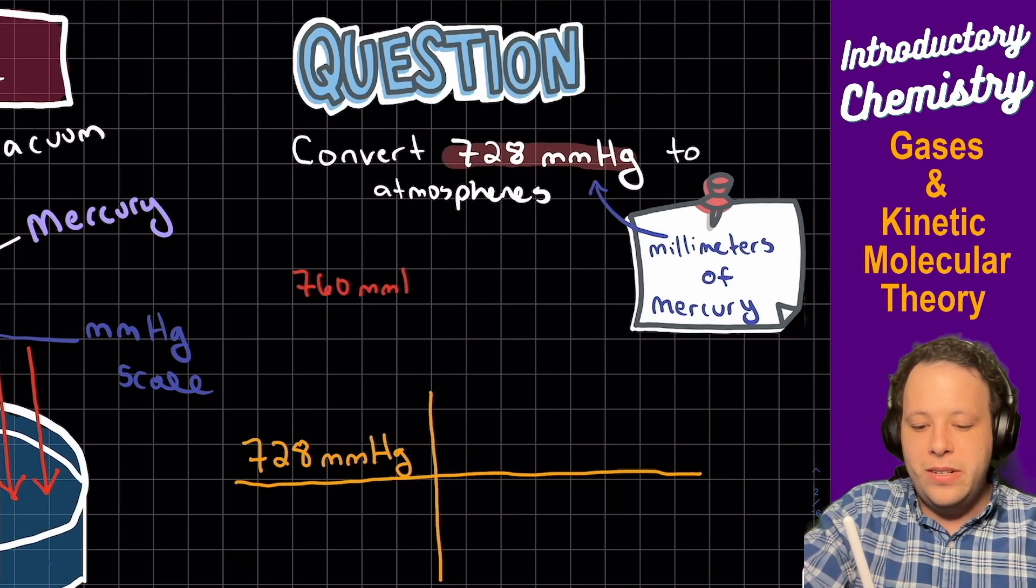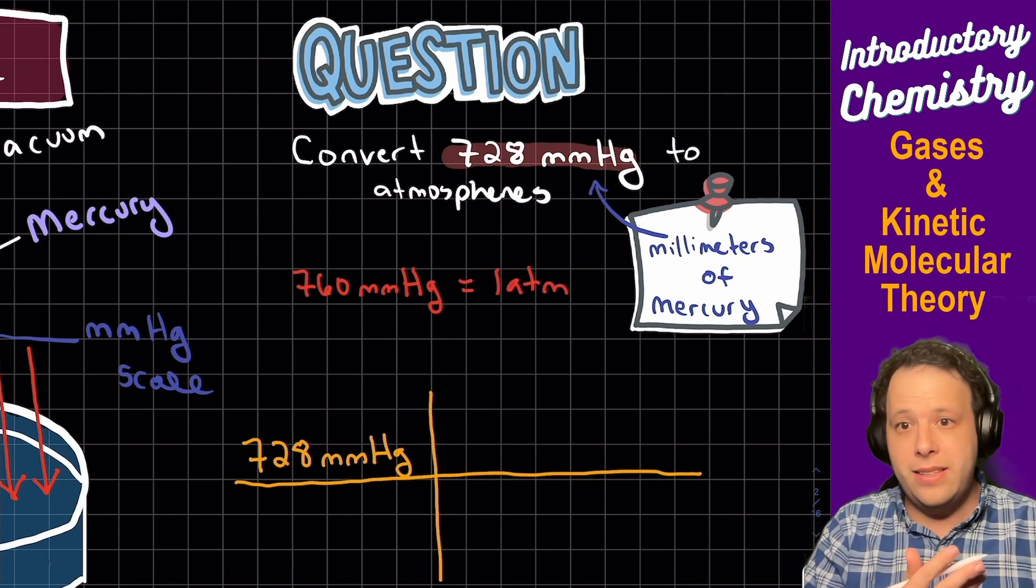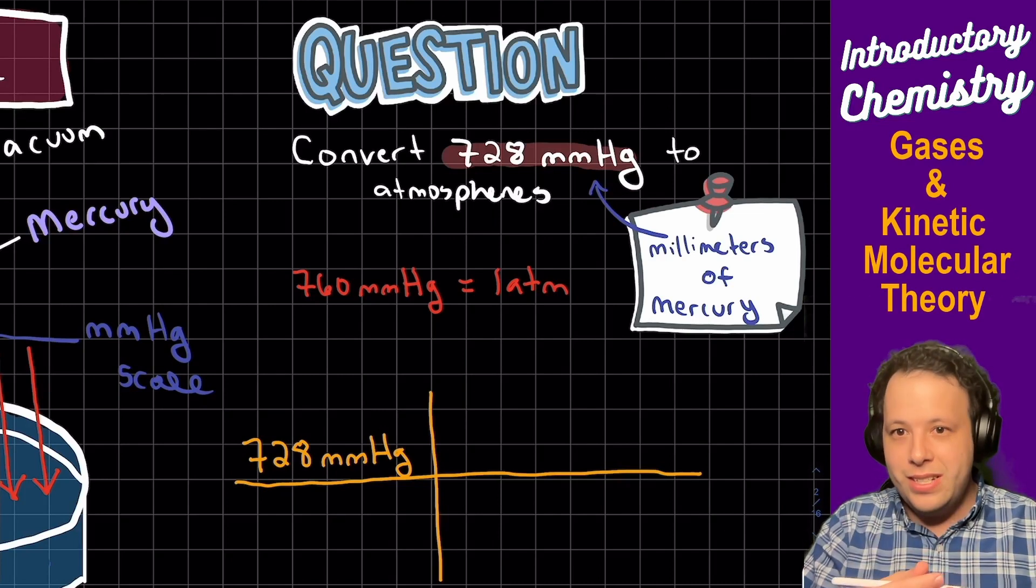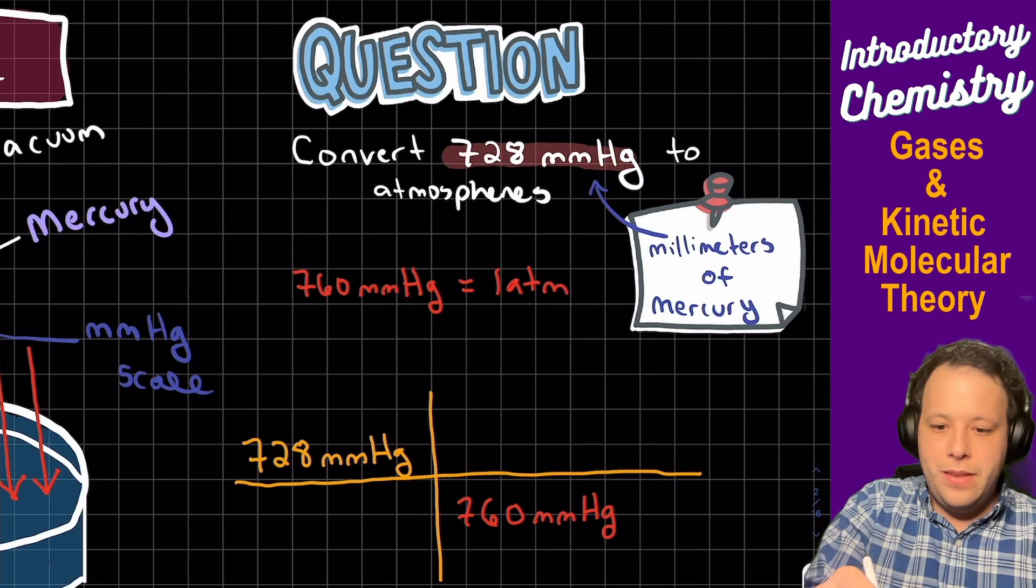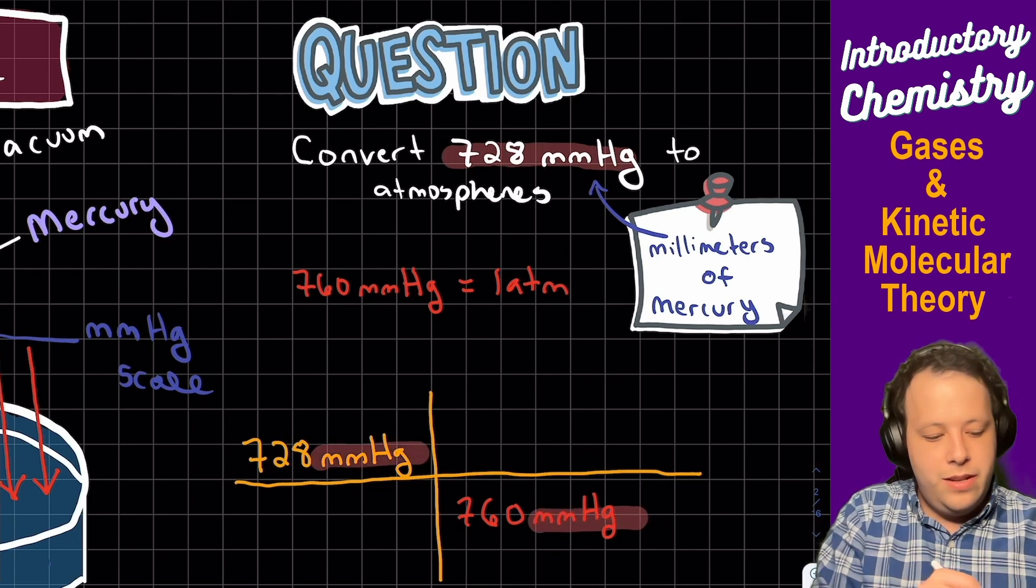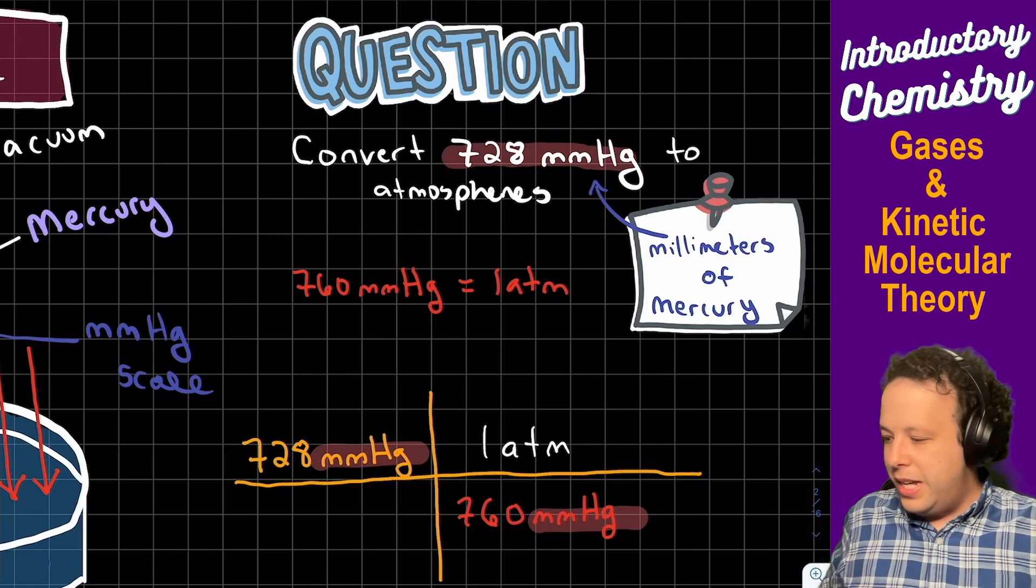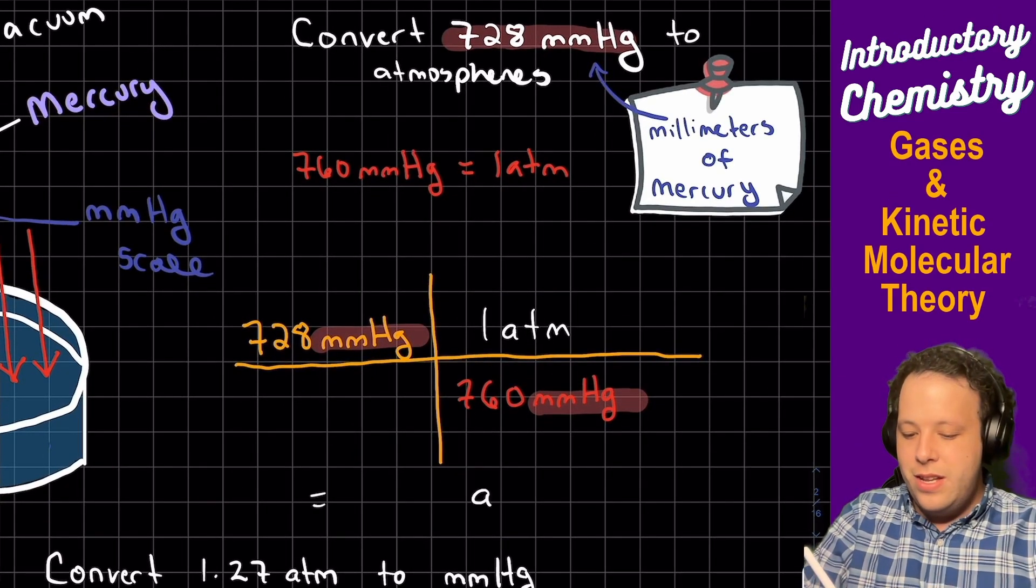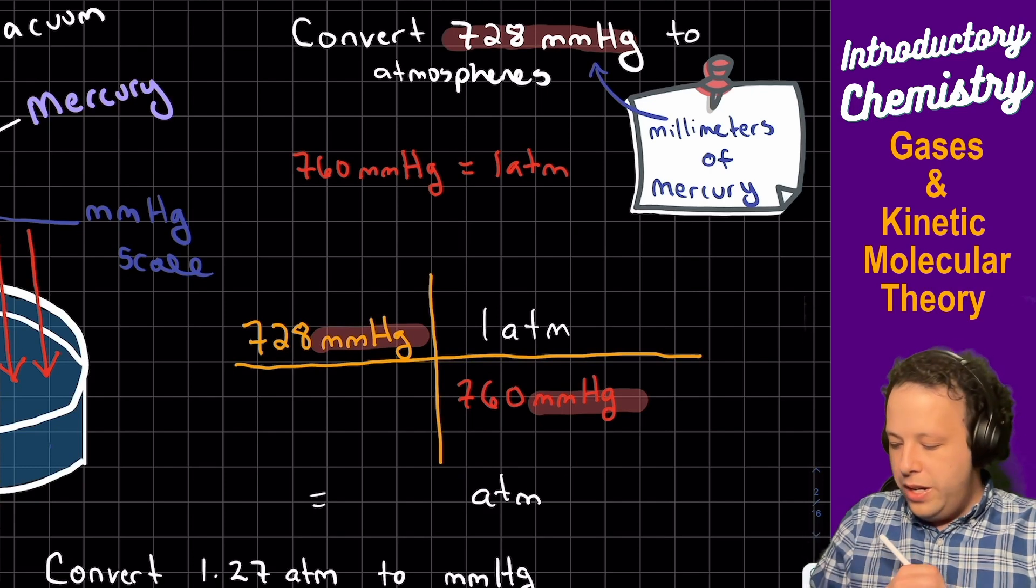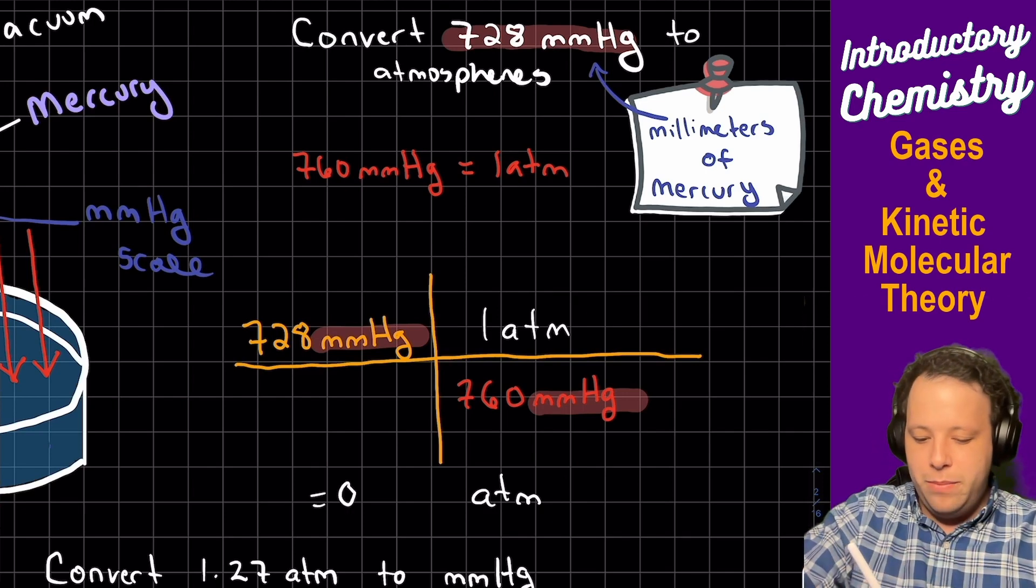Well, for this one the common conversion is that 760 millimeters of mercury is equal to one atmosphere. So how would we set this up? Well, it's about canceling units - they have to be opposite of one another. So we will put the 760 millimeters of mercury on the bottom, that's going to cancel out. One atmosphere is going to go on the top, and that's going to help us cancel that one out as well. Now that's going to leave us with our units that are left. When we go through this, you're going to take 728, divide it by 760 to get your final answer.